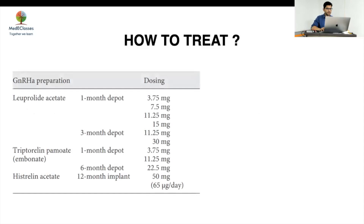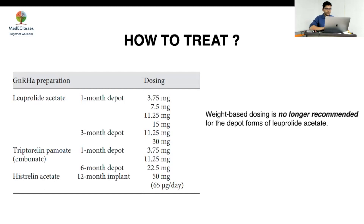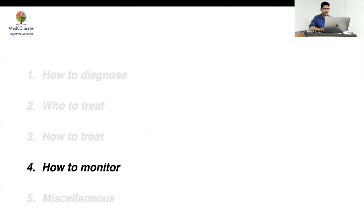Regarding how to treat: leuprolide acetate is the most commonly used formulation. The USA started with higher doses of 7.5 mg progressing to 11.25 mg, whereas European countries start with 3.75 mg monthly, and the three-month depot is 11.25 mg. Studies such as Carol et al. used 11.25 mg for patients above 20 kg with satisfactory results, but weight-based criteria have not been firmly established. Importantly, weight-based dosing in mcg/kg is no longer recommended for leuprolide acetate — if suppression is inadequate, increase the frequency rather than calculating per-kg dose.